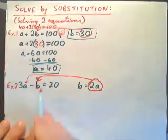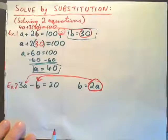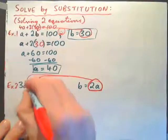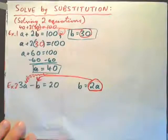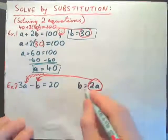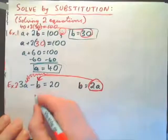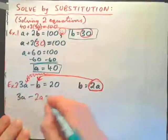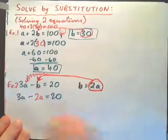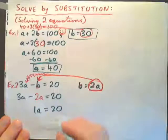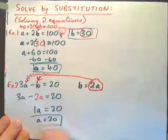We definitely plug it in for b — not for a — because it says b equals two apples, not a. So b is the same as 2a, and in place of b I can put 2a. My equation should now read 3a minus 2a equals 20. If I solve that, I have 1a — one apple equals 20. So a is 20; an apple costs 20 cents.